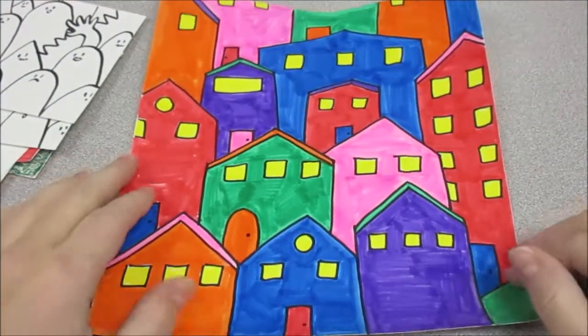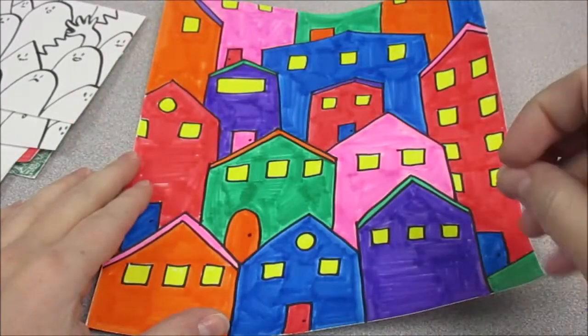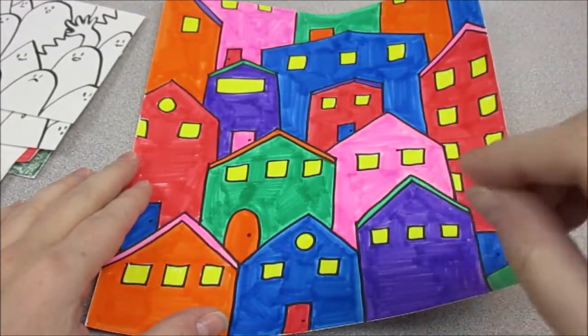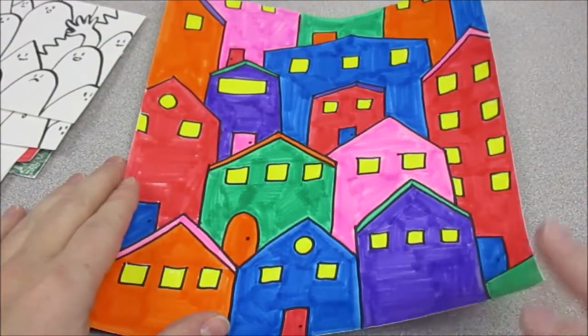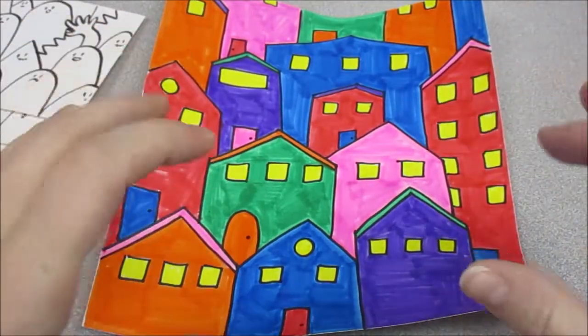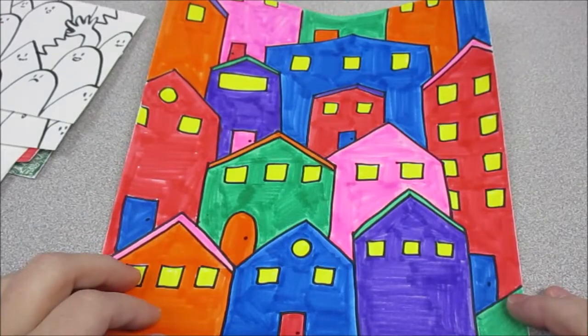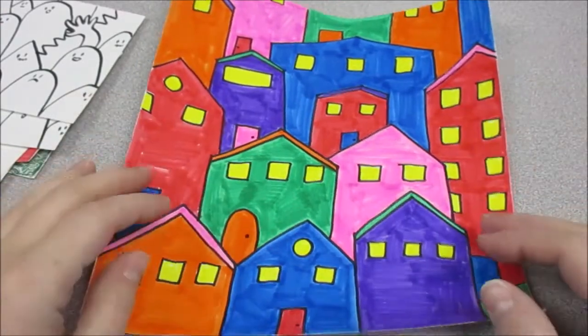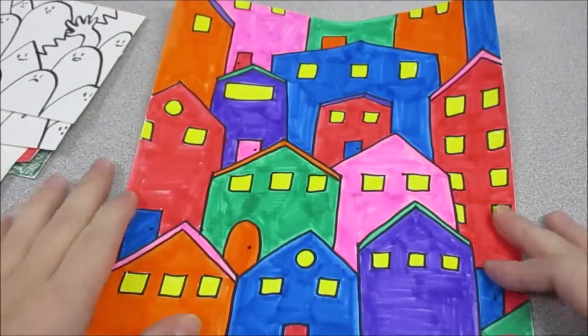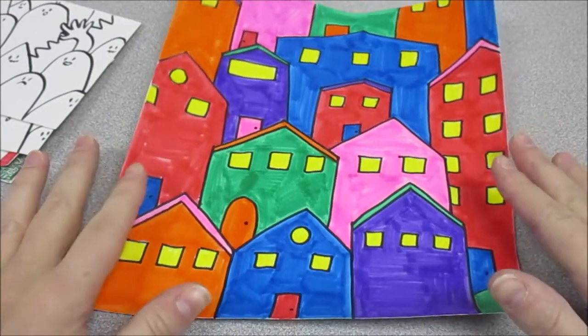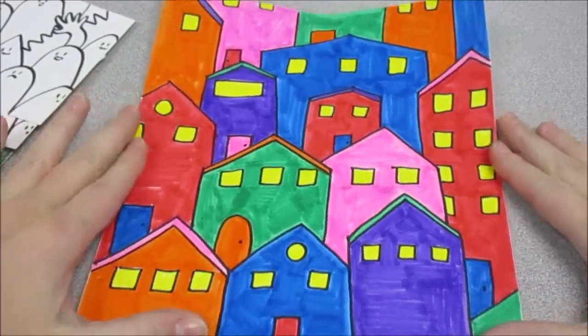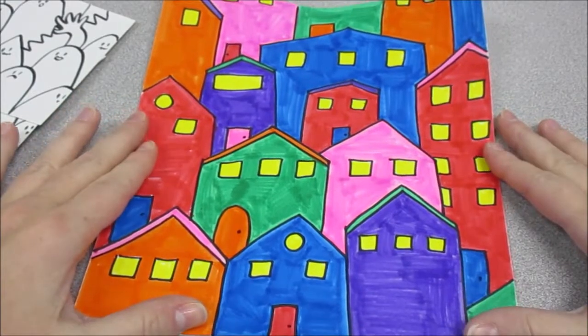So this picture has unity of building shape, and it has unity of color windows. Then all the variety comes from different colored buildings and the different shapes and heights of the buildings and the doors and the windows. So this is going to be our unity project, making a colorful neighborhood.